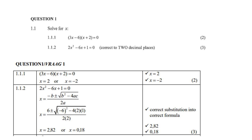So let's go back to 1.1.1. Therefore you can equate each bracket equal to 0. So 3x - 6 = 0 or x + 2 = 0. Then you make x the subject in both and you get x = 2 or x = -2. So it's one mark for each answer.